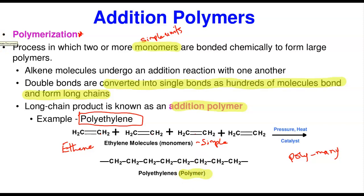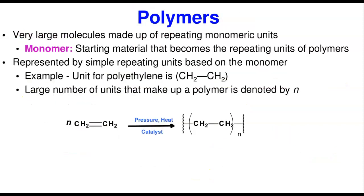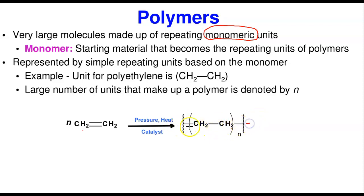Polyethylene is an addition polymer made up of several thousands of ethylene molecules. Now let's define these terms formally. Polymers are very large molecules made up of repeating monomeric units. A monomer is the starting material that becomes the repeating unit of the polymer. Polymers are usually represented by their repeating unit based on the formula of the monomer. For example, ethylene is CH₂=CH₂; when it forms a polymer it is represented as —(CH₂–CH₂)n—, where n can be hundreds of thousands.